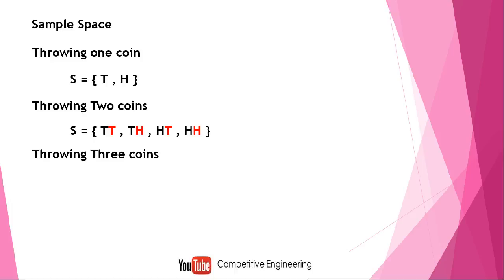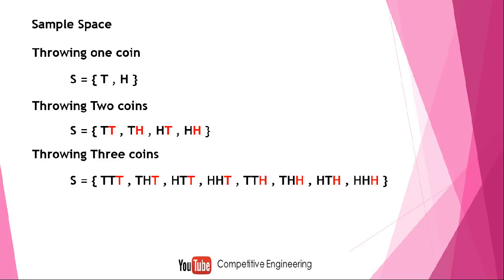For three coins, I write the two-coin sample space two times. The first four elements are the two-coin sample space repeated, and on the right side I write T for the first four and H for the next four. Now I have the three-coin sample space. In the same way, for four coins, I write the three-coin sample space two times and put T on the first eight elements and H on the next eight, giving a size of 16.